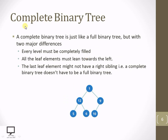A complete binary tree is just like a full binary tree, but the difference is that every level must be completely filled. While inserting nodes in a complete binary tree, each level must be completely filled, and all leaf elements must lean towards the left — meaning insertion starts from the left of every level. The last leaf element might not have a right subtree; a complete binary tree doesn't have to be a full binary tree.